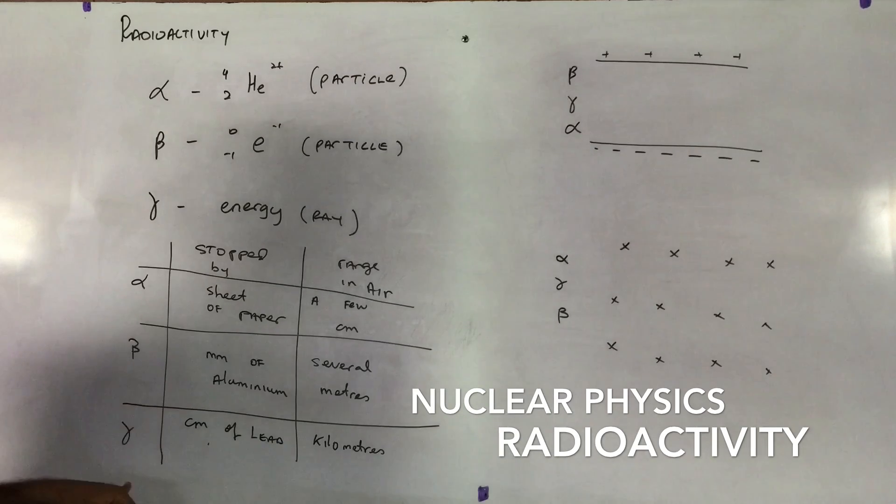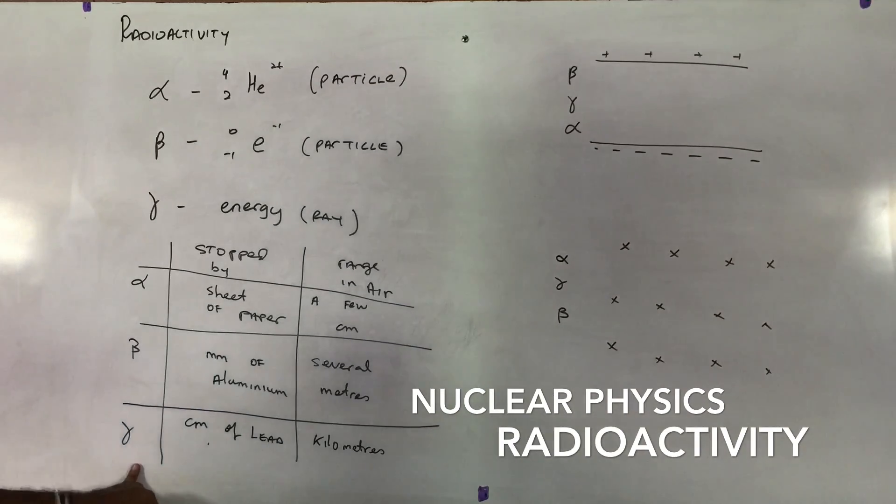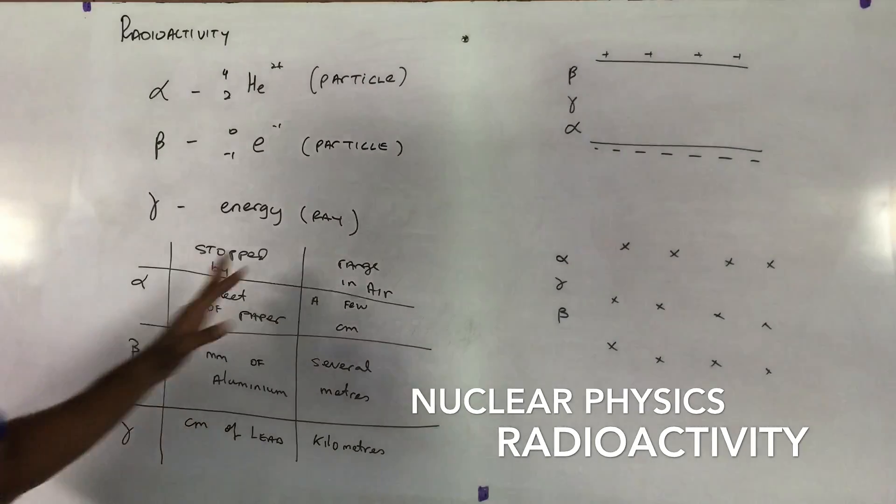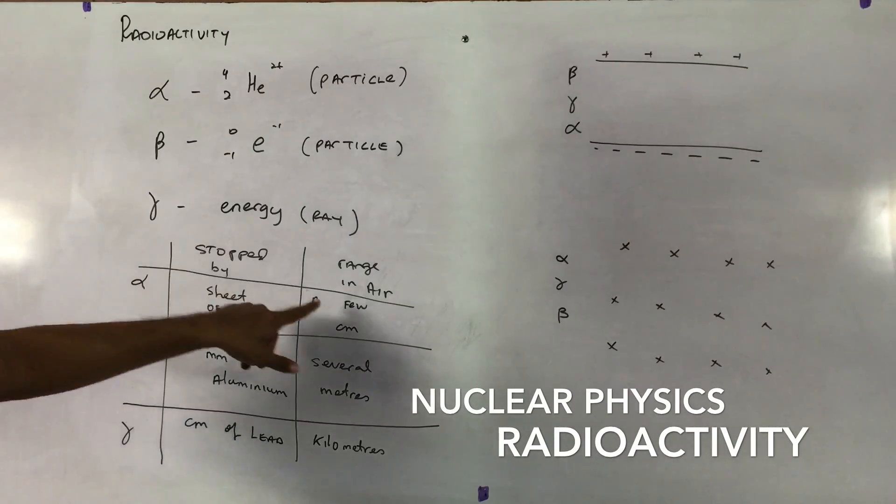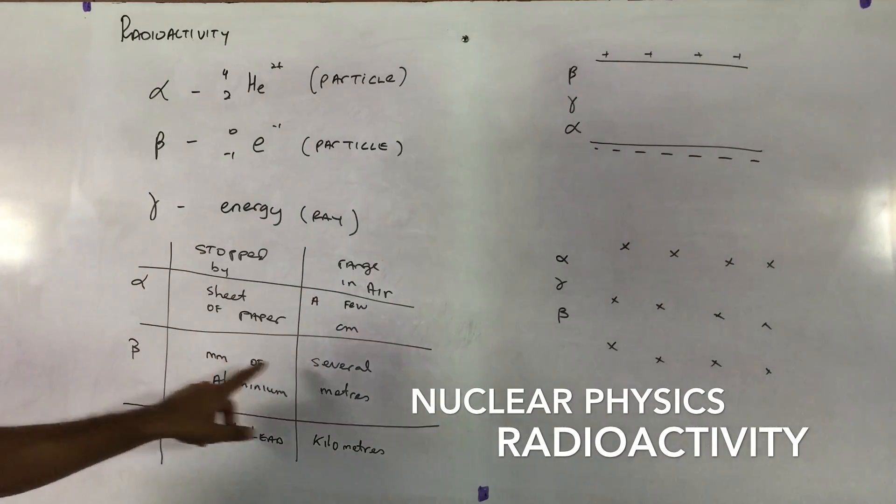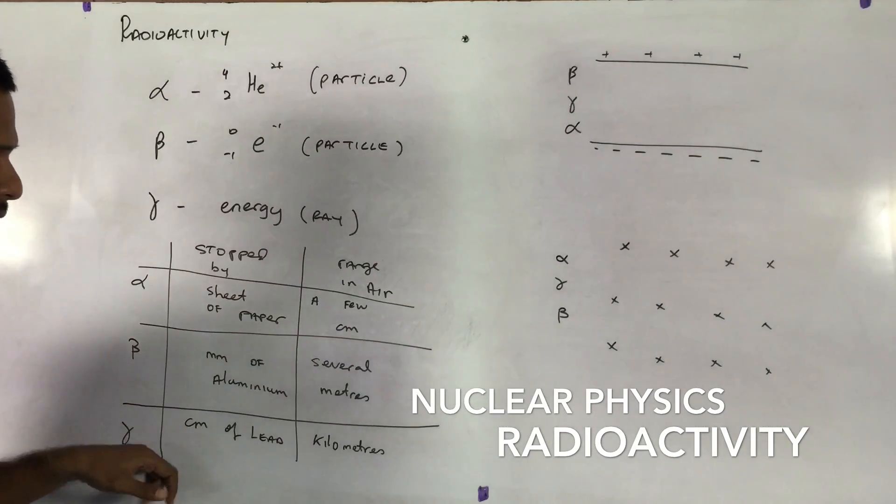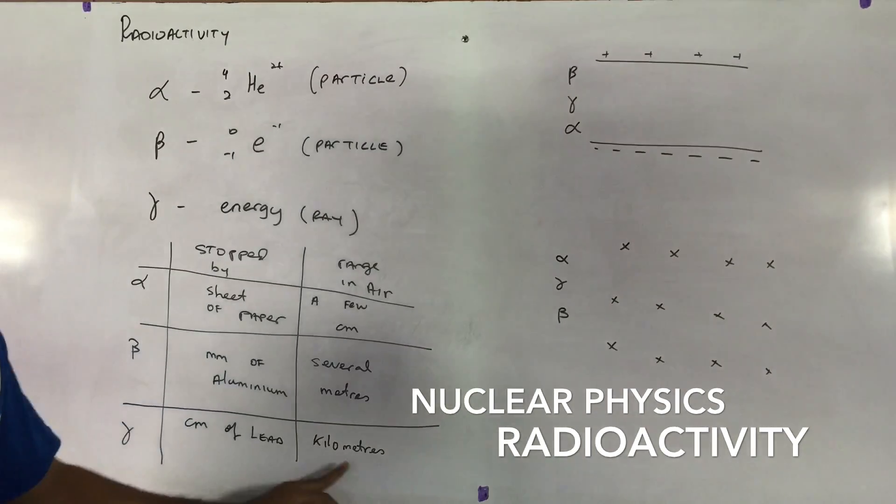Beta is stopped by alumina. And gamma, which is the most penetrative, can be stopped by a few centimeters of lead. How far will they travel in air if there is nothing to stop them? Alpha will travel a few centimeters, beta will travel a few meters, and gamma will travel a few kilometers.